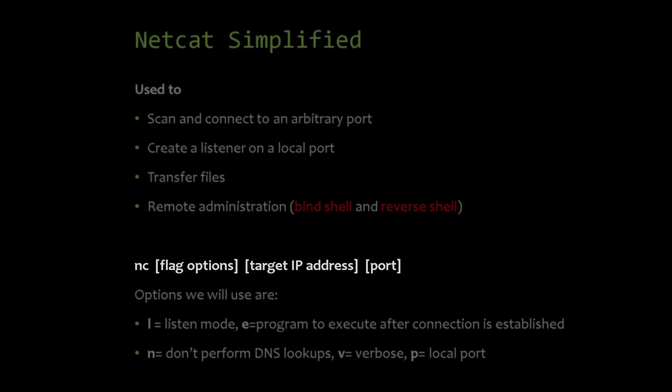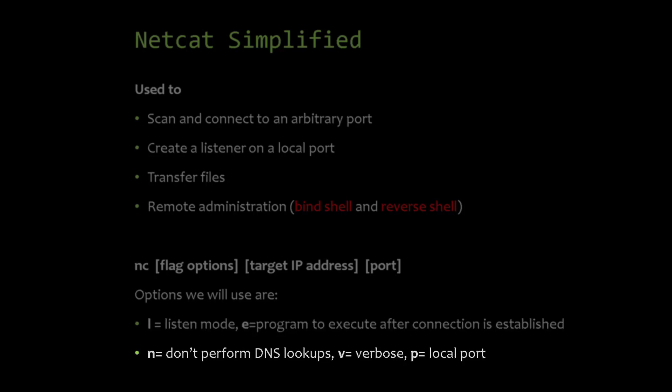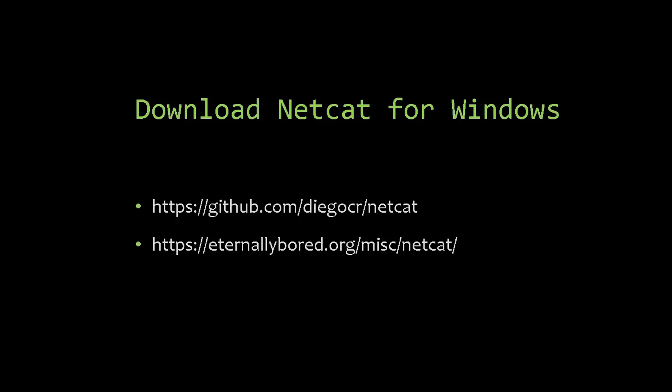The parameters are: -l for listen mode; -e to execute a program after the connection is established; -n to tell the program not to perform DNS lookups; -v for verbose, which shows status of the connection — errors, whether the connection is established, etc. — so at the console we will be able to see some information; and -p for the local port. Netcat usually comes installed on Kali Linux.